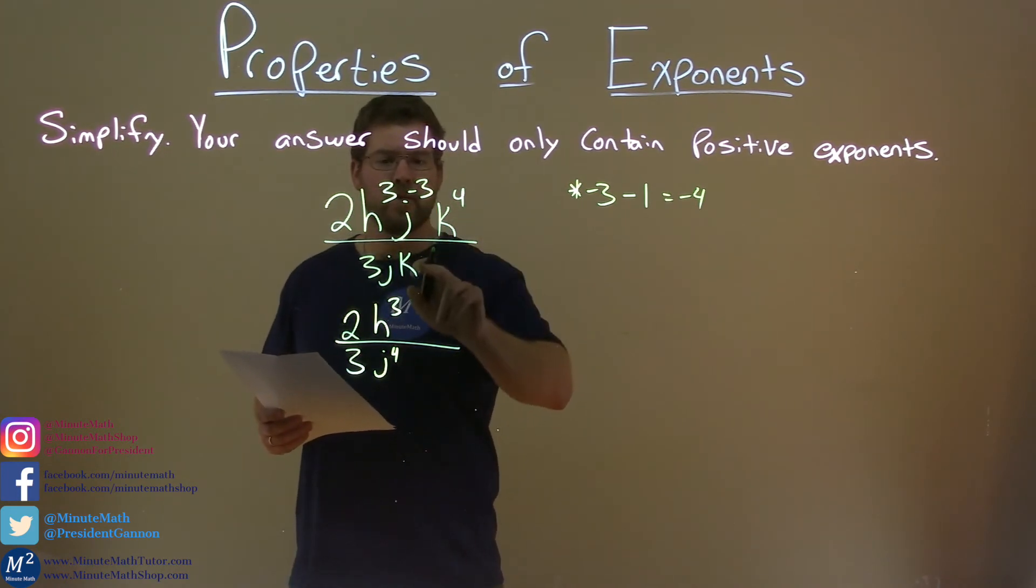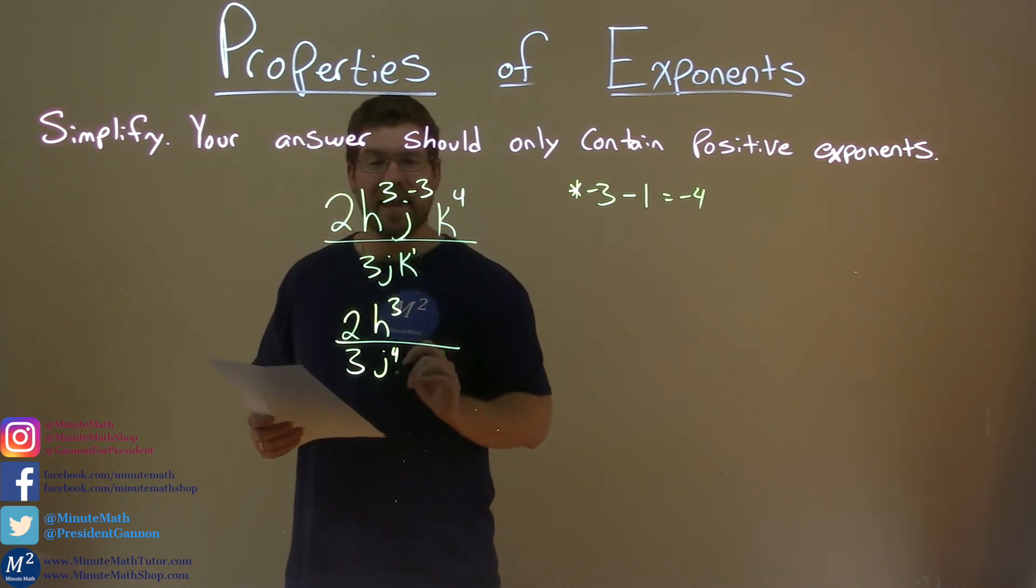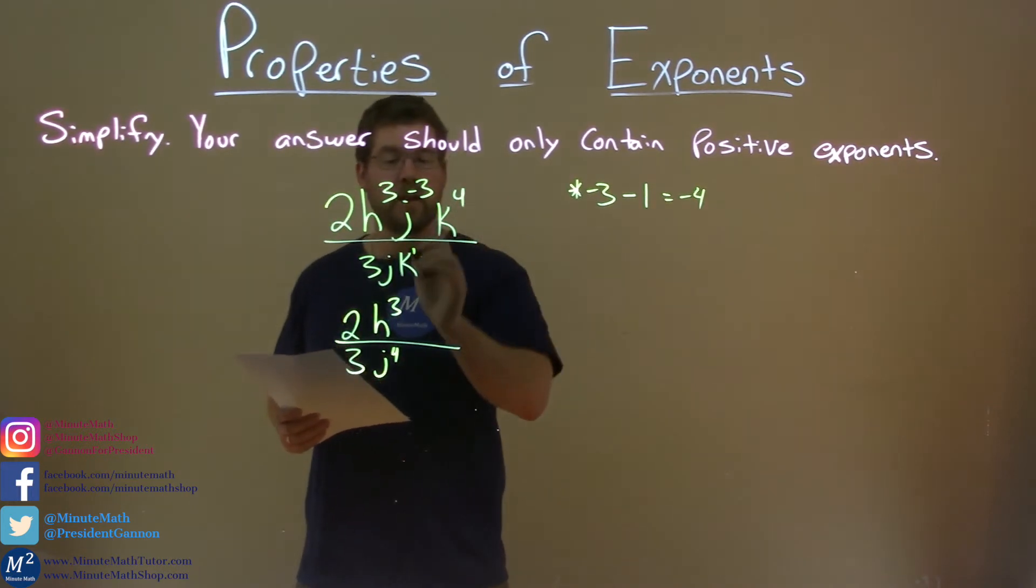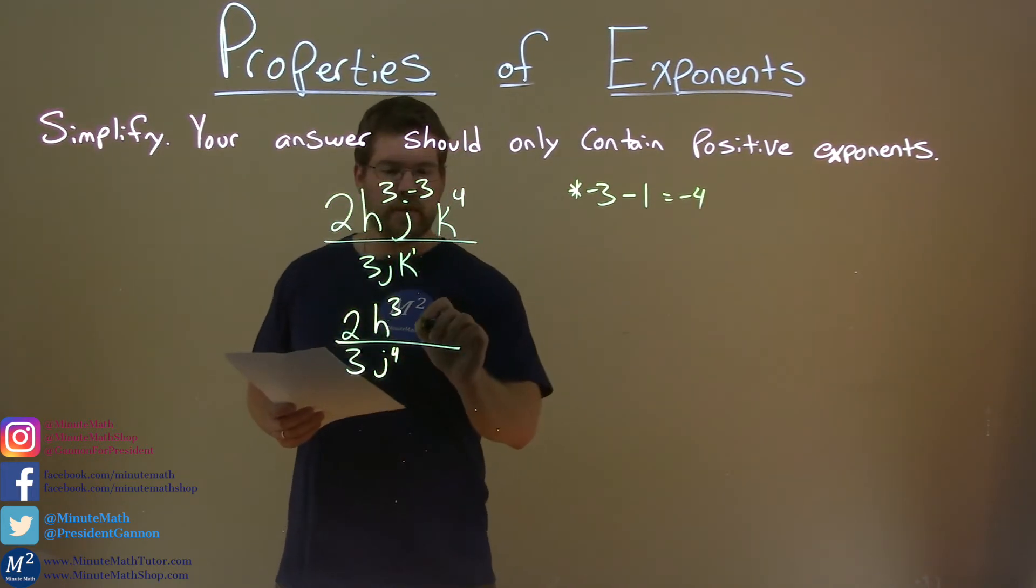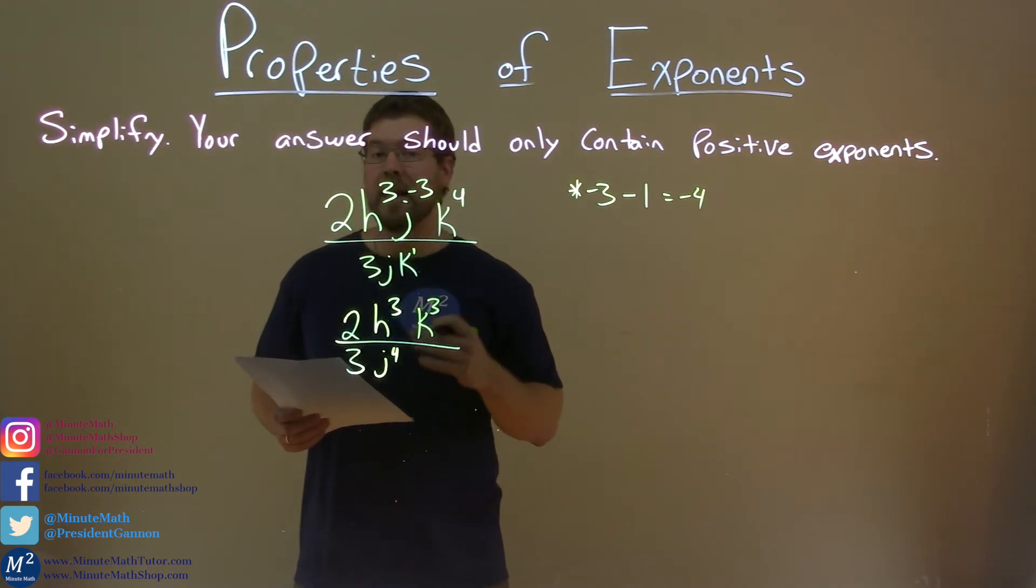Lastly, k to the fourth over k. That's like k to the first power, right? We subtract the exponents. 4 minus 1 is 3. So we have k to the third power in the numerator.